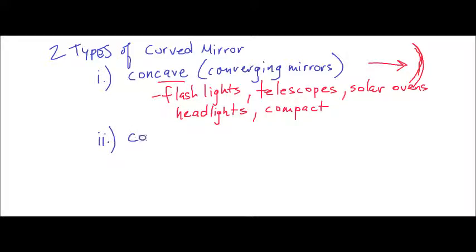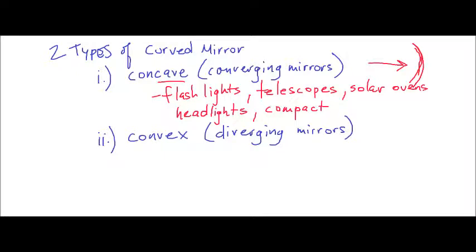The second type of mirror we're going to look at is convex mirrors, otherwise known as diverging mirrors. These mirrors spread light outwards, and they typically form virtual images — images that cannot be obtained with a screen.